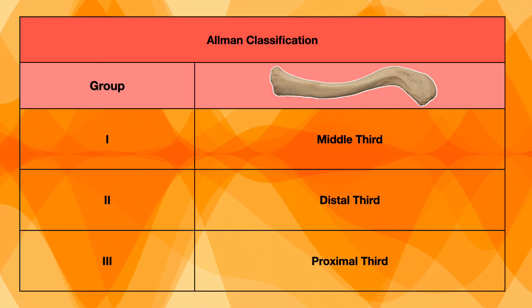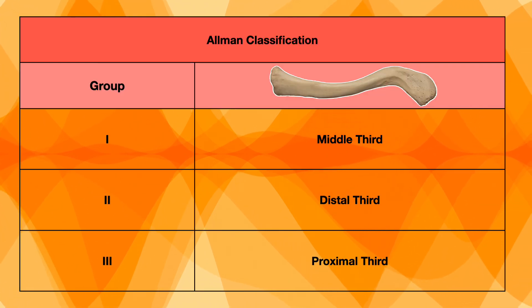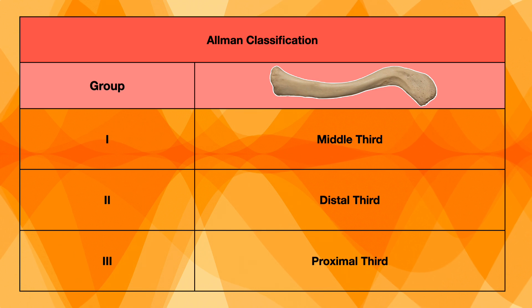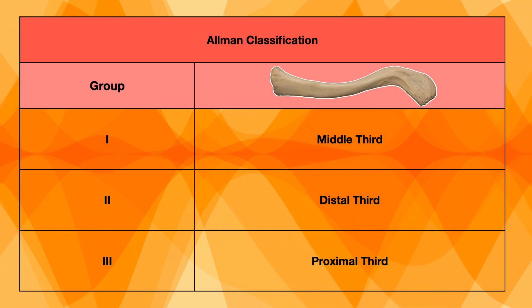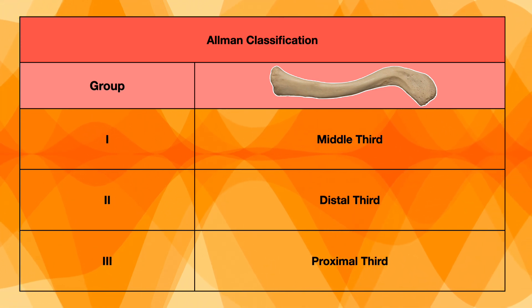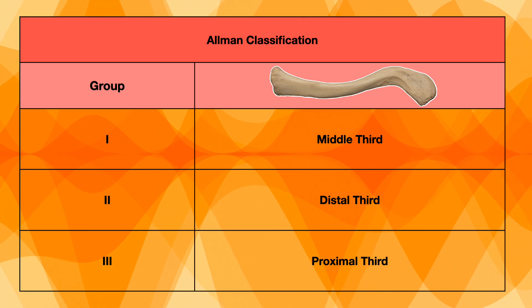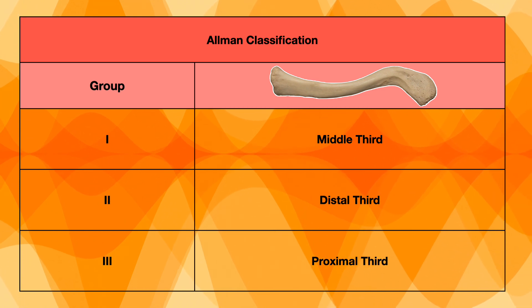Allman divides the clavicle fracture into three groups: one, two, and three. Group one is a middle third clavicle fracture, group two is a distal third clavicle fracture, and group three is a proximal third clavicle fracture.